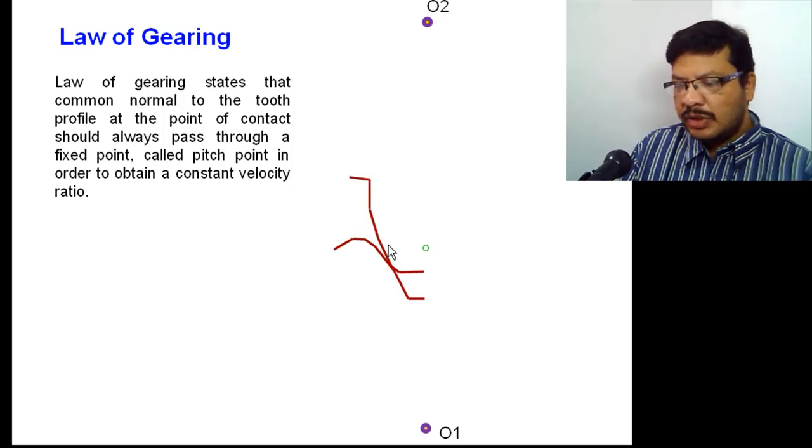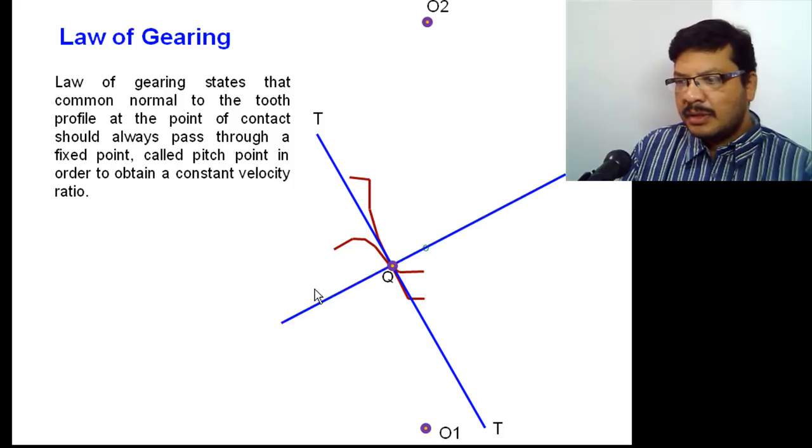One pair of gate teeth as shown here. Q is the point of contact. TT is the tangent drawn to the pair of gate teeth at point Q. Then normal for the tangent is as shown here.